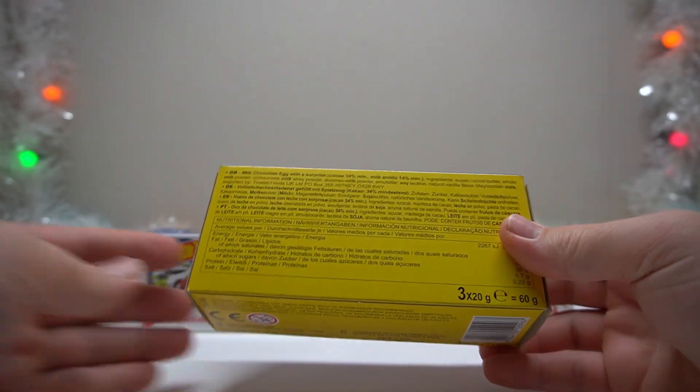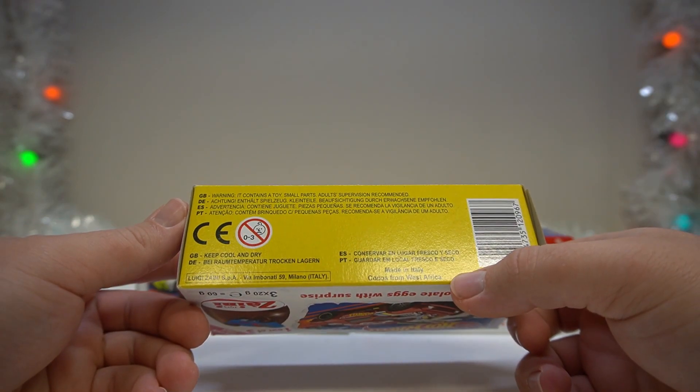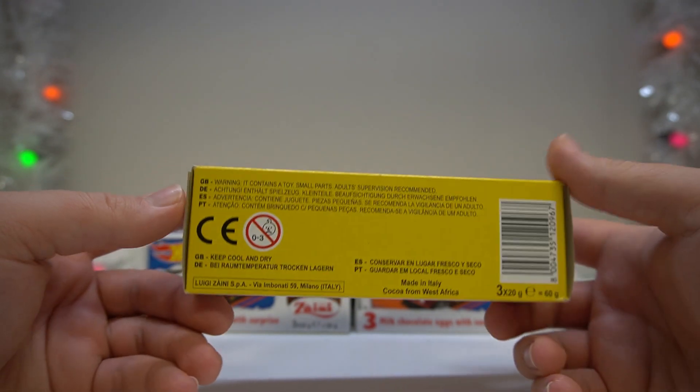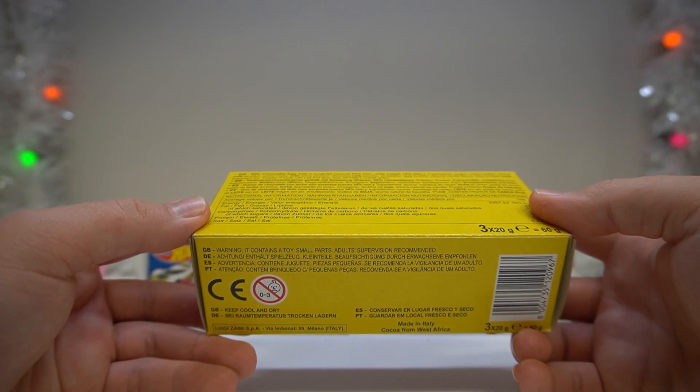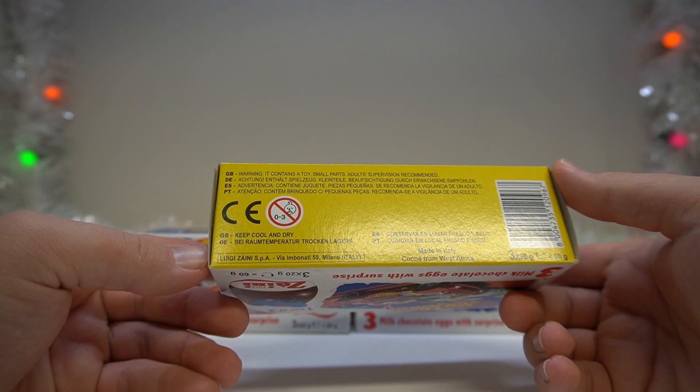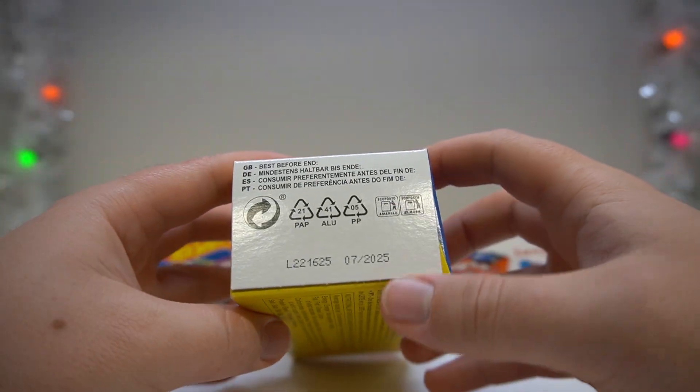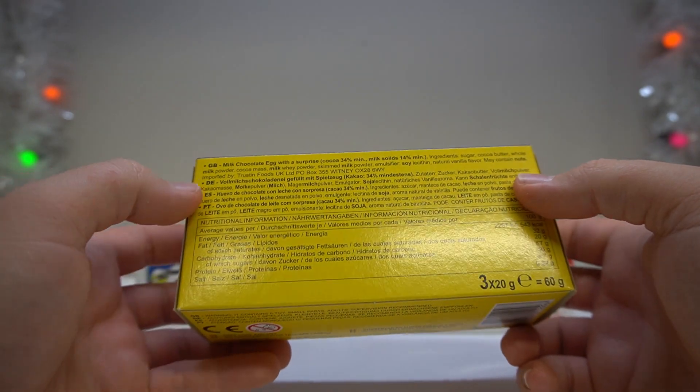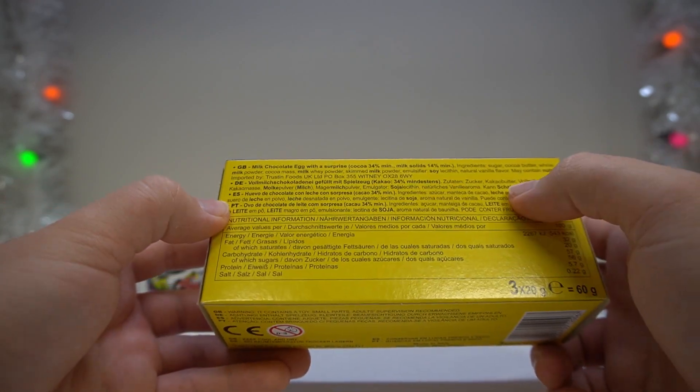And we'll also see what the chocolate is like as well. Now, first things I have noticed, I was like, oh, what's the date on these, I wonder. Are they in date? We'll shed a bit more light on this. Now, they are in date. I can't remember where it was. Made in Italy. Cocoa from West Africa. Warning, it contains a toy. Small parts. Adult supervision recommended. Yeah, I don't think they'd be able to have these in America, will they? Because they can't have toys and things or stuff inside food that kids could choke on. So, yeah. Keep cool and dry. Wait on earth was the date? I'm probably staring straight at it. Oh, there it is. 07-2025.